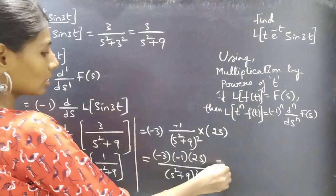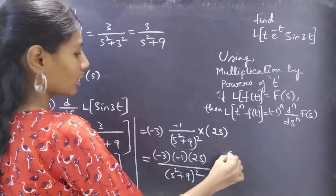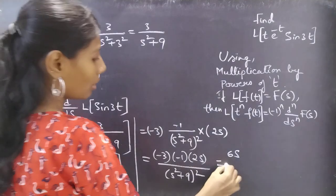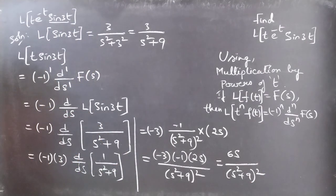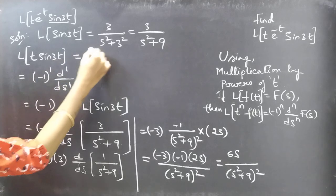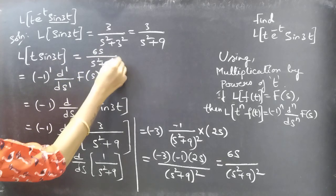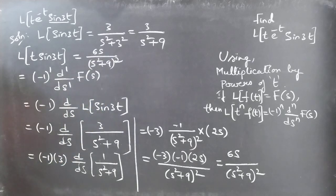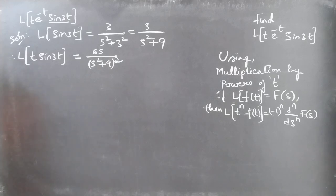This gives us minus 3 times minus 1 times 2s by (s square plus 9) whole square. Minus times minus gives plus, and 3 times 2 is 6, so we get 6s by (s square plus 9) whole square. Therefore, L of t·sin 3t equals 6s by (s square plus 9) whole square.